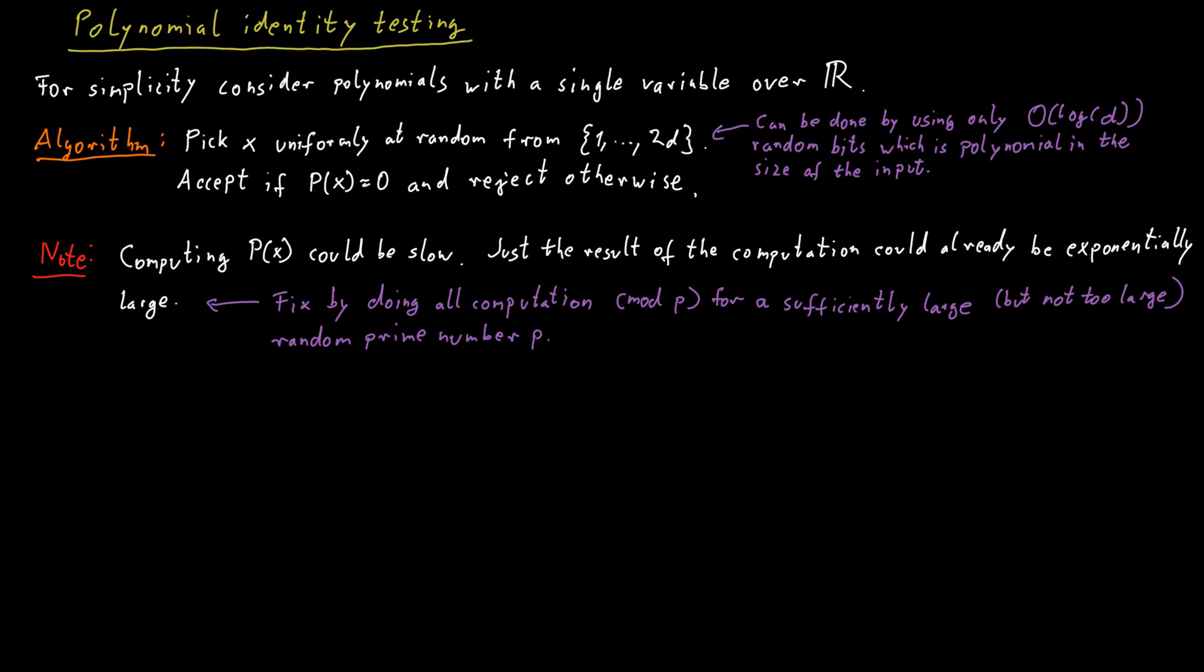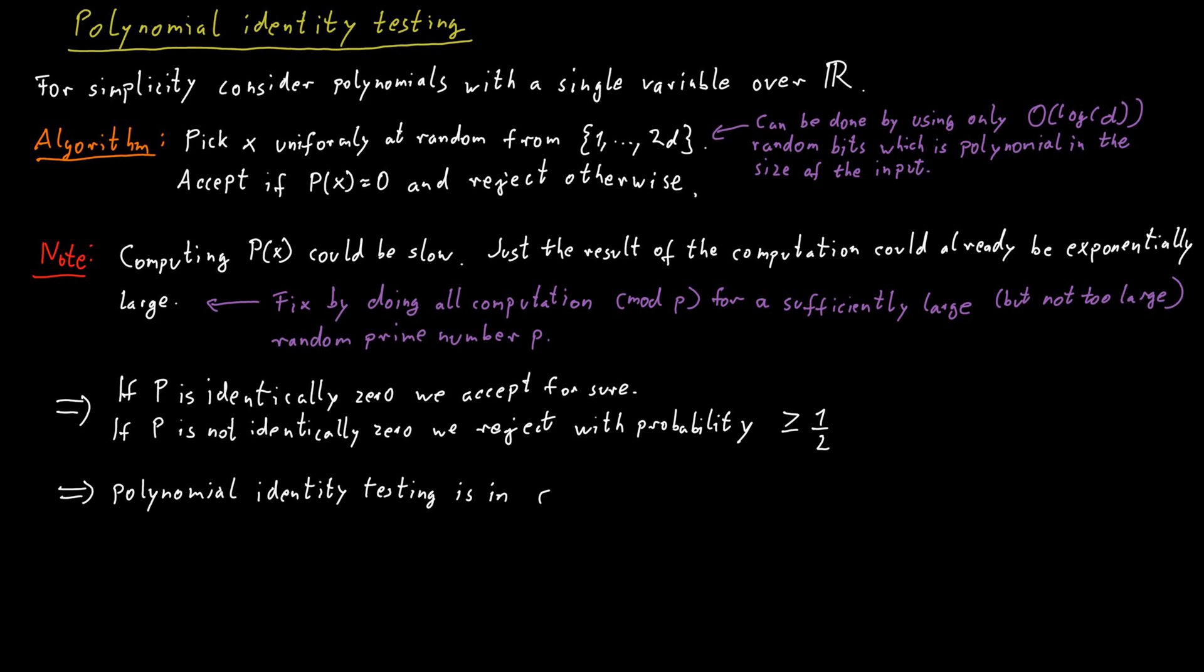Overall, we get a randomized procedure that will decide this polynomial identity problem. And if the polynomial is equal to zero everywhere, we will detect this for sure and give the correct answer. And if it's not equal everywhere, we will give the correct answer with the probability of at least one half. So polynomial identity is, as a problem, contained in this complexity class, CoRP.